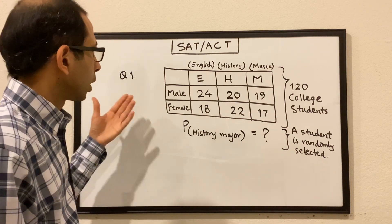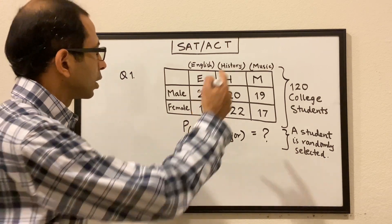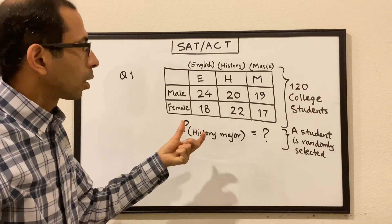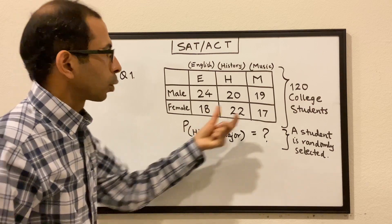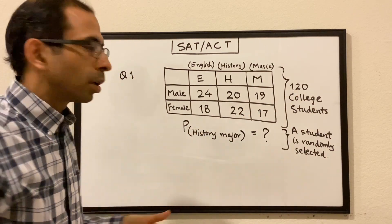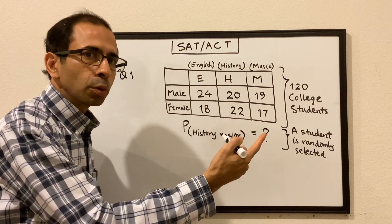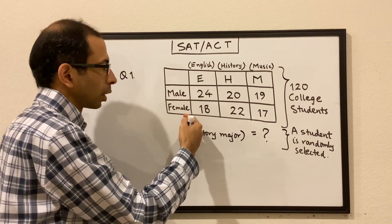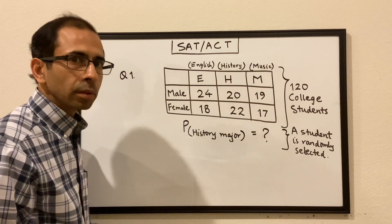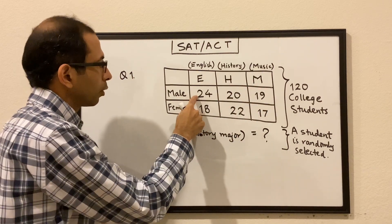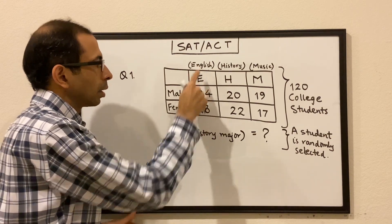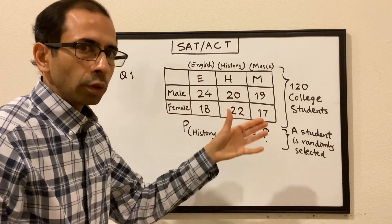Let's get started. The first question: we have a table given here and this table talks about a total of 120 college students. The table gives a breakup of those 120 college students with respect to their gender and with respect to the subjects in which they are doing their majors. For example, 24 male students are doing a major in English whereas 18 female students are doing a major in English, and so on.